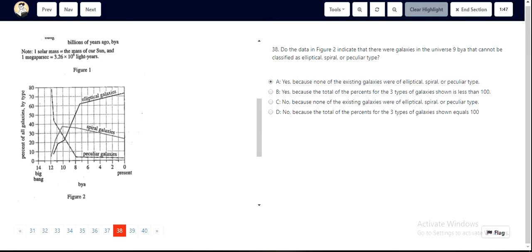For question 38, if we look at Figure 2, we can see that 9 billion years ago, as identified in the question, peculiar galaxies were about 15 percent, spiral galaxies and elliptical galaxies were around 36 to 37 percent. We can take an upper bound for this particular percentage. Now if we add all of these numbers, 37 times 2 and we add it to 15.